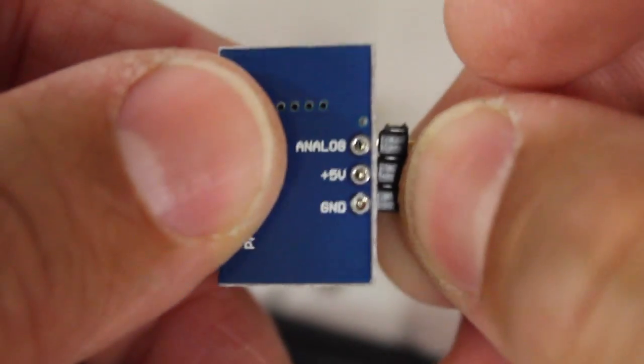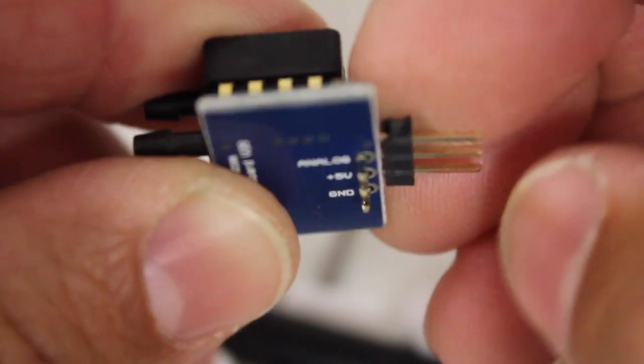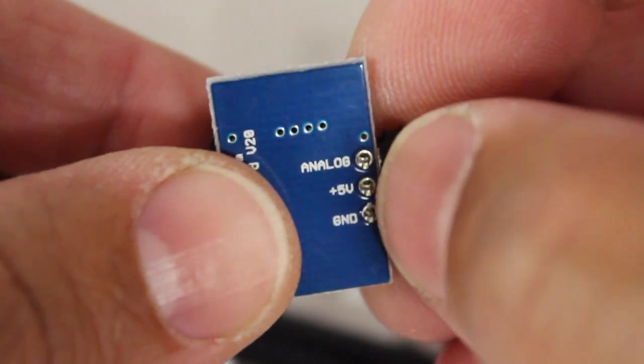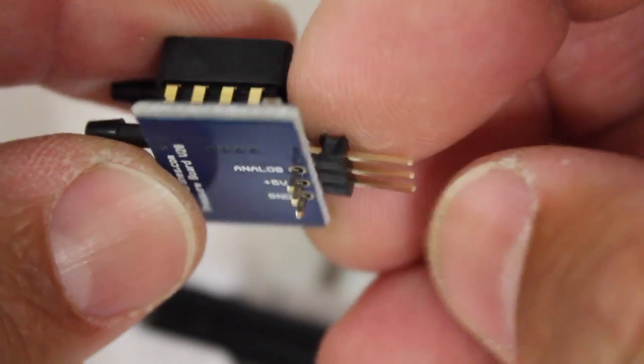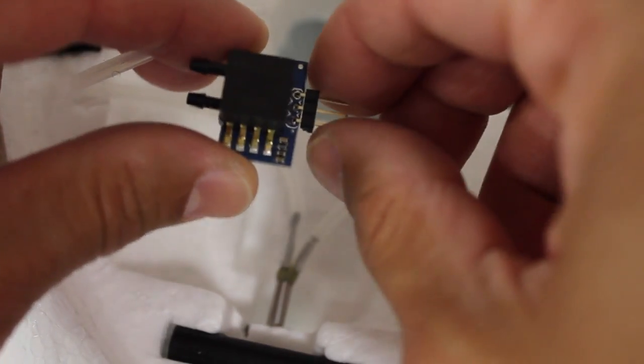Next we'll solder these header pins. The ones supplied are actually 90 degree angle and you can see analog, five volts and ground. Okay we have our header pins soldered on.